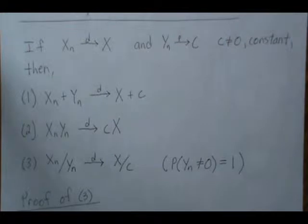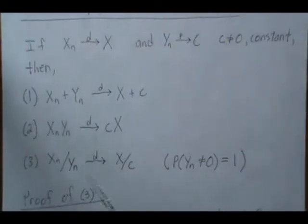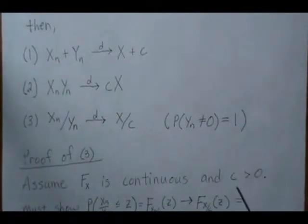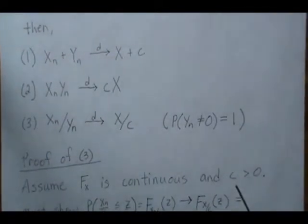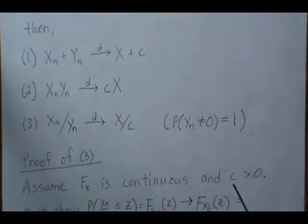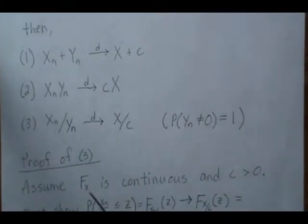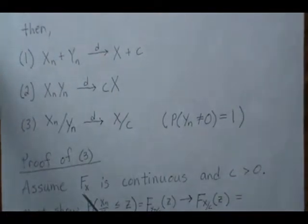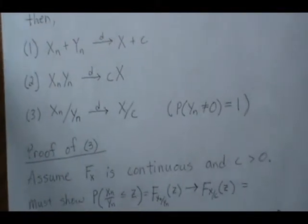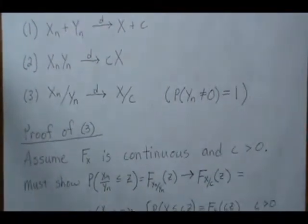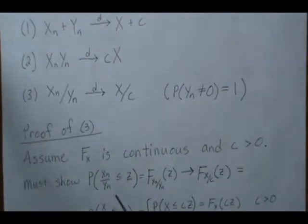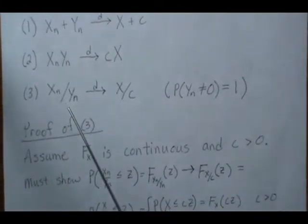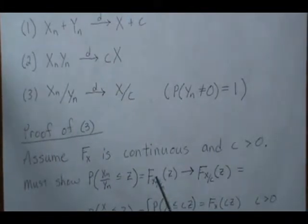In the interest of time, we're going to only prove the third case — the ratio. We're going to assume X is continuous and that C is positive. For negative C it's a very similar proof, and for the discrete case it's a little different but similar. So we must show that the distribution of Xn over Yn converges in distribution to X over C.